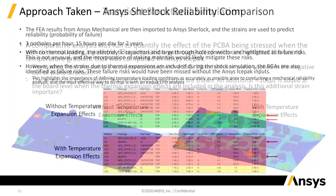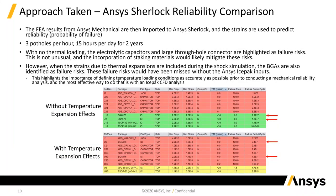We can take the entire analysis and bring it back into SHERLOCK for reliability purposes. Without the temperature expansion effects, Tyler looked at two specific components — U9 and U10, as you can see from the two red arrows at the top. When you add the temperature expansion effects, they become critical components, whereas before they were not. So the mechanical shock reliability analysis inside of SHERLOCK was performed twice — once with the temperature expansion effects and once without — and you can see that with the temperature expansion effects it has a higher probability of failure.